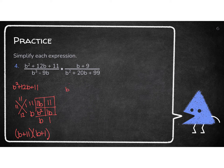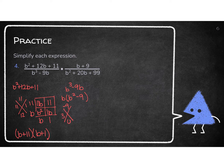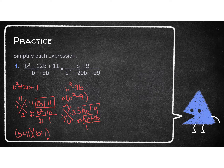Bottom of the first fraction: B³ minus 9B. They both have a B in common, so I pull that out front, leaving B² minus 9. Since it's still squared, I factor it. Negative 9 on top, 0 on the bottom gives me 3 and negative 3. Setting up the box: B², 3B, negative 3B, and negative 9. That gives me B plus 3 and B minus 3 — with the GCF B out front, so B(B plus 3)(B minus 3).